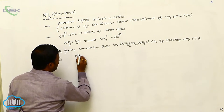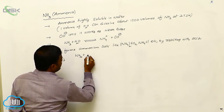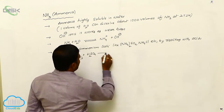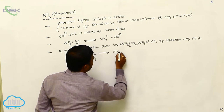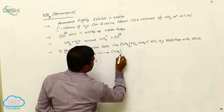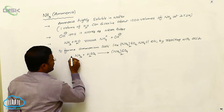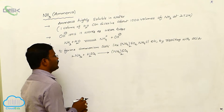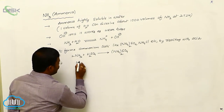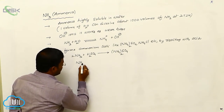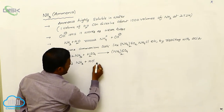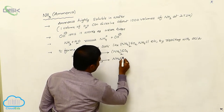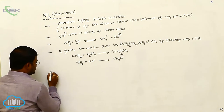For example, when ammonia reacts with sulfuric acid (H₂SO₄), it forms (NH₄)₂SO₄ — two moles of ammonia react with one mole of sulfuric acid. Similarly, when ammonia reacts with hydrochloric acid (HCl), it yields ammonium chloride (NH₄Cl) as the product.